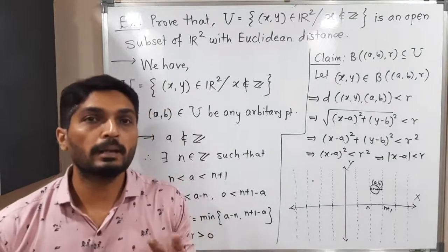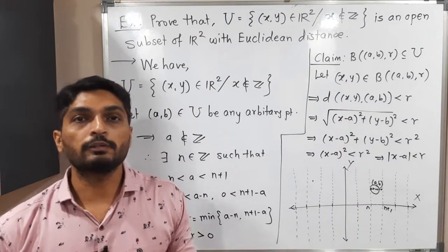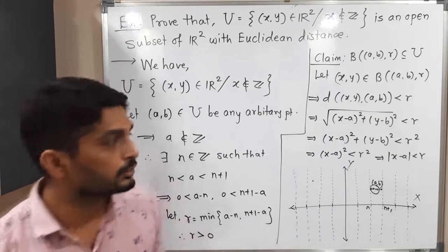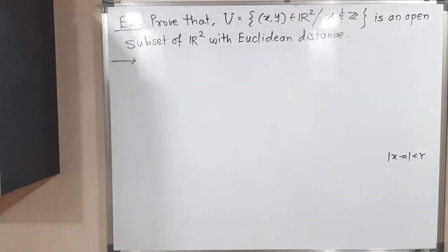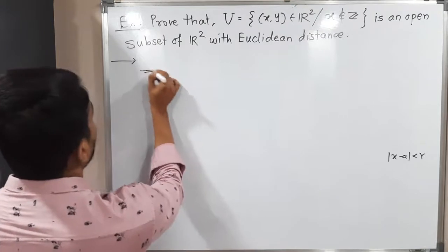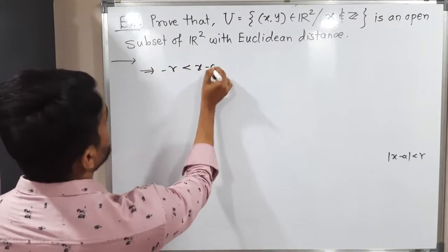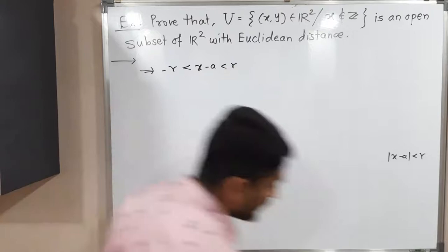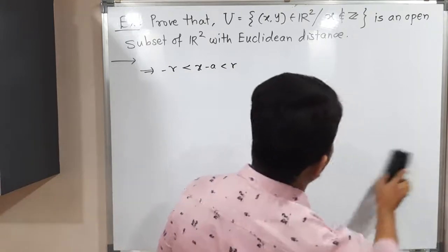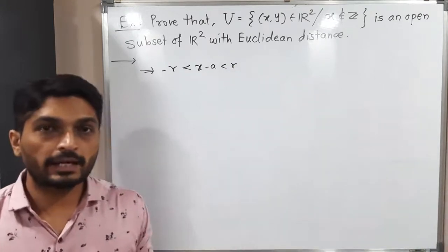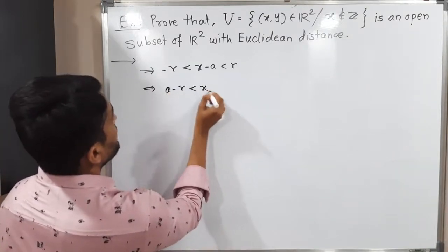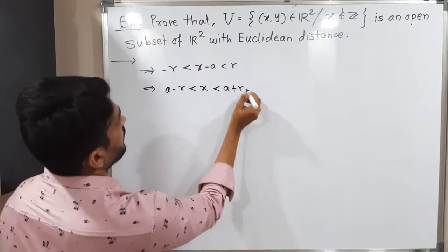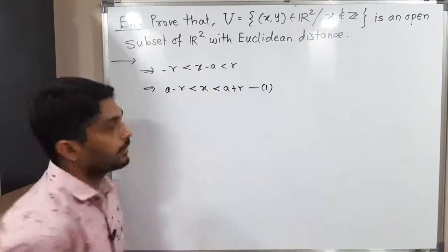Using the standard result that |a| < b if and only if -b < a < b, we get -r < x - a < r. Adding a to all sides gives a - r < x < a + r. I will call this inequality (1).